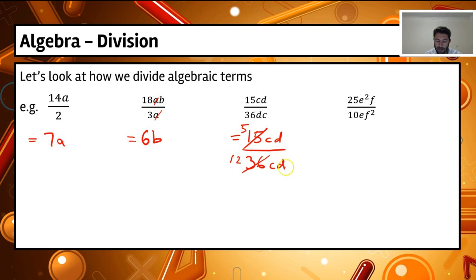Now the cd and the cd, effectively those two cancel each other out. So we're left with 5 over 12.